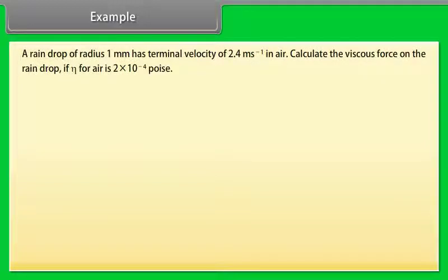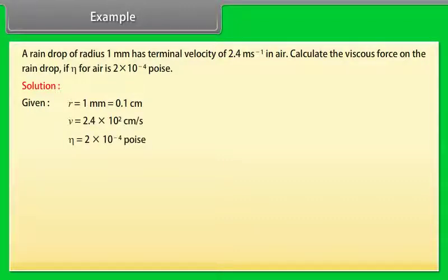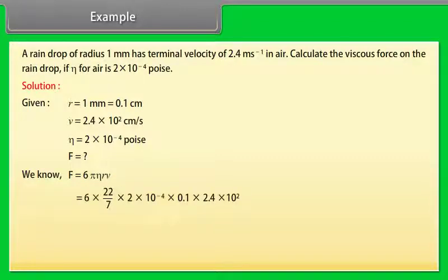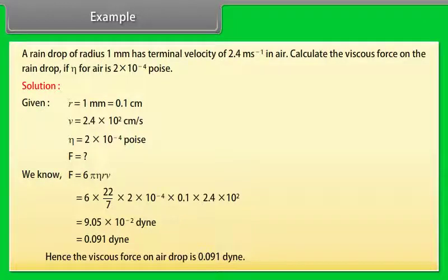Example. Let's take an example on Stokes law. A raindrop of radius 1 mm has terminal velocity of 2.4 m/s in air. Calculate the viscous force on the raindrop if η for air is 2×10⁻⁴ poise. Given values are R equals 1 mm which can be written as 0.1 cm, V equals 2.4×10² cm/s, η equals 2×10⁻⁴ poise. We know that F equals 6πηRV. Putting their respective values in the above equation, on calculating we get F equals 9.05×10⁻² dyne which equals 0.091 dyne. Hence the viscous force on the raindrop is 0.091 dyne.